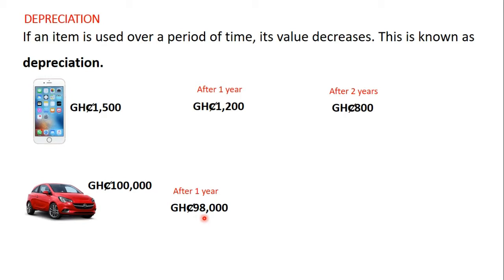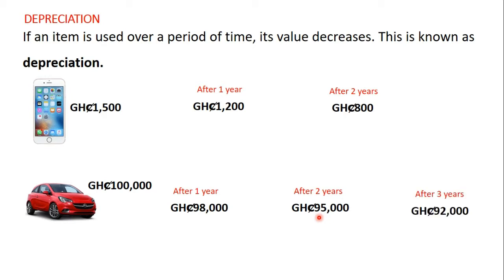If he decides to sell it after the second year he will have to still reduce the price further, so he will sell it around 95,000 GHS. If he decides to sell it after the third year he will have to reduce the price again, so he will sell it around 92,000 GHS.